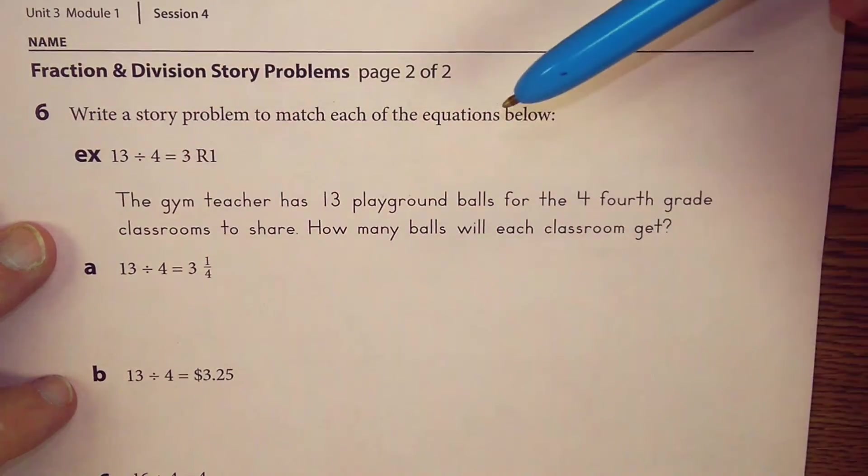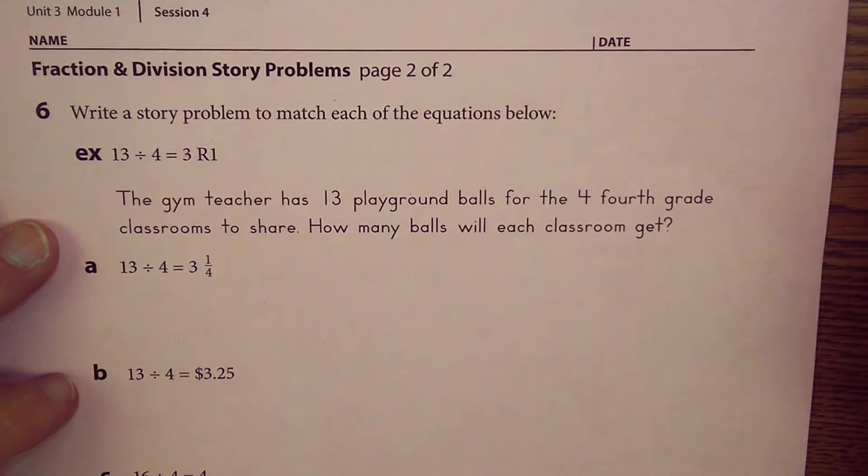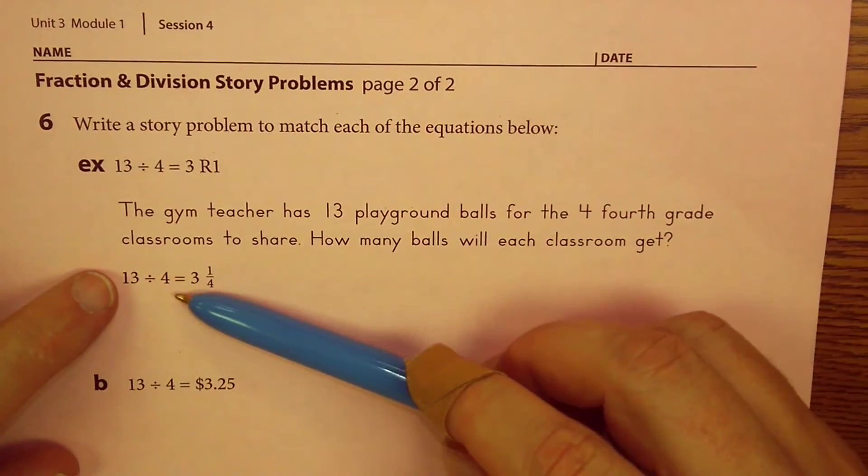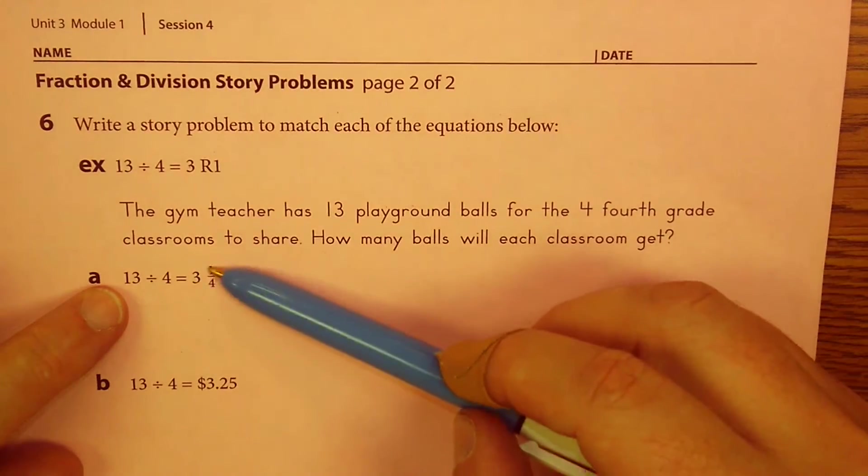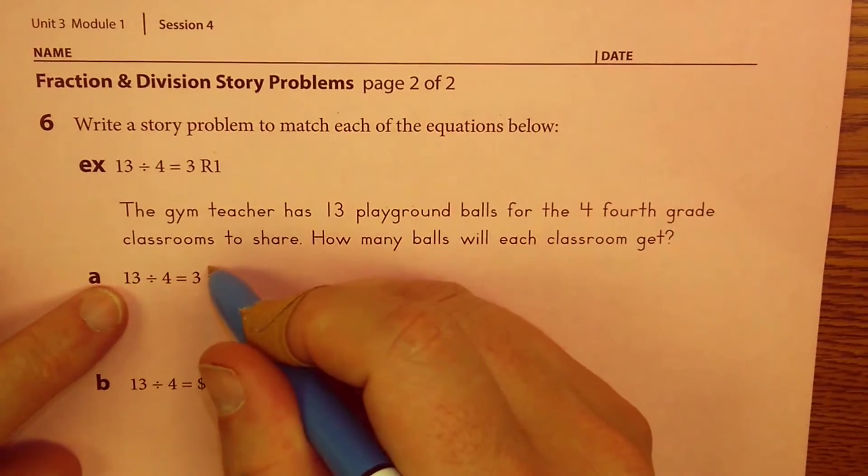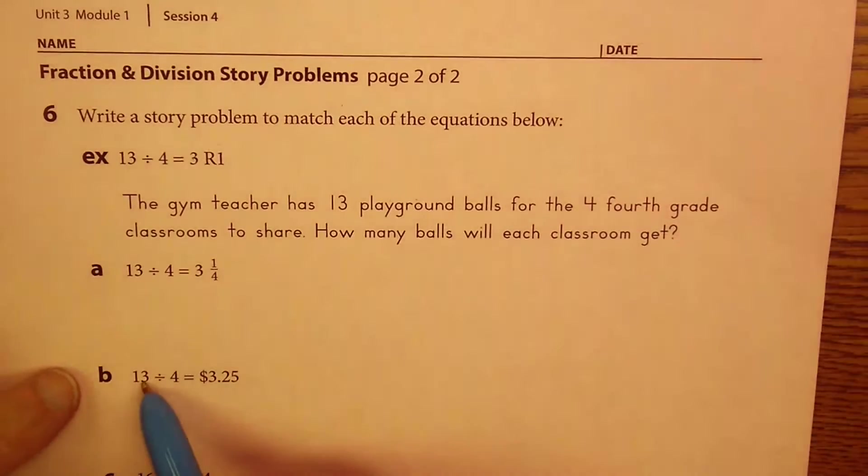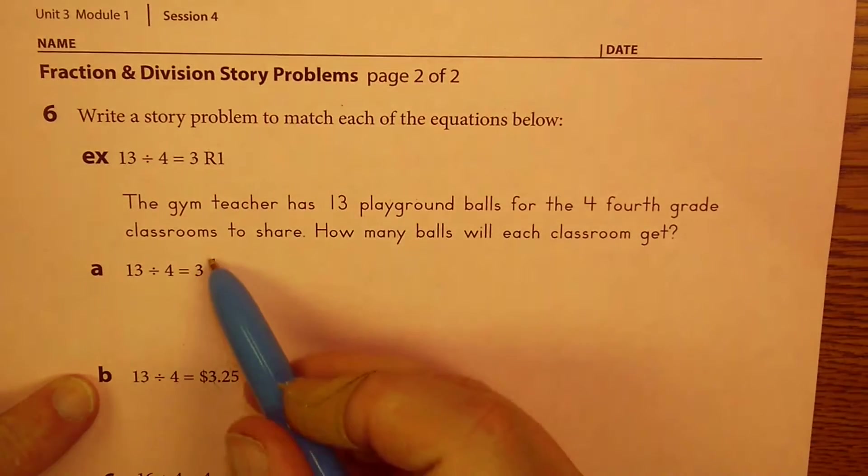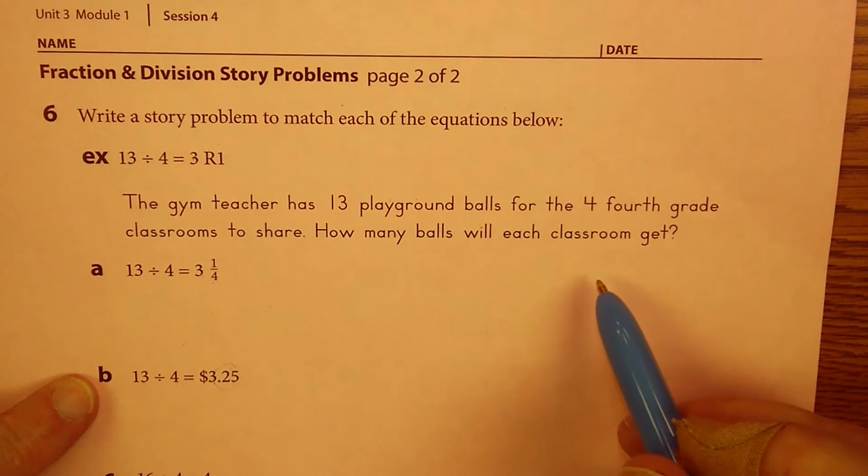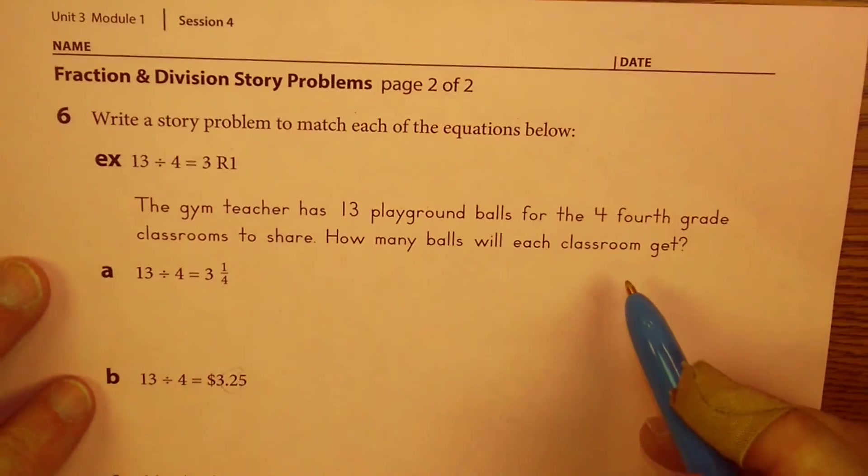You get 13 divided by 4 again. But here, instead of a remainder one, they're going to say that there's a quarter left for everybody. Here is another 13 divided by 4. And instead of one-fourth, we have 25 cents, which is the same. One quarter of a dollar is 25 cents, right? And then we'll have a new number here, which we'll talk about later.